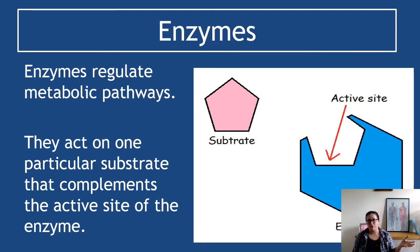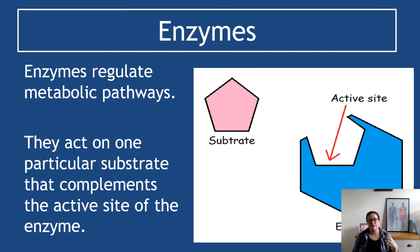The presence or absence of enzymes will control the speed of a metabolic pathway. They act on one particular substrate that complements the active site of the enzyme. People have a tendency to say that the active site is the same shape as the substrate, and that's not true. If the active site were exactly the same shape as the substrate, it would be a sticky-out pentagon. Instead, it's a complementary shape - it matches the edge of the shape of the substrate.